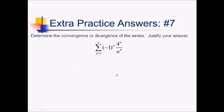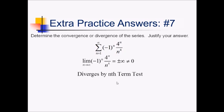For this problem, I notice that I have an alternating series. Let me think about what's happening as n approaches infinity. If you look at these functions, we have an exponential in the numerator and a polynomial in the denominator. We know exponential growth outpaces polynomial growth. So as n approaches infinity, this is actually going to go to plus or minus infinity, which is not equal to 0, which means this thing is going to diverge by the nth term test.